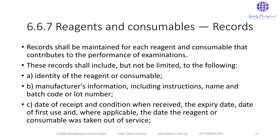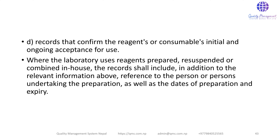6.6.7 Reagents and Consumables Records: Records shall be maintained for each reagent and consumable that contributes to the performance of examinations. These records shall include: identification of the reagent or consumable; manufacturer information including name and batch or lot number; date of receipt and condition when received; expiry date; date of first use and, when applicable, date taken out of service; and records confirming initial and ongoing acceptance for use. Where the laboratory uses reagents prepared, resuspended, or combined in-house, records shall also include the person undertaking preparation, as well as dates of preparation and expiry.